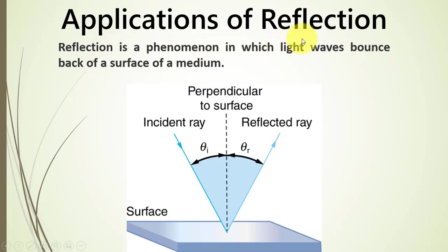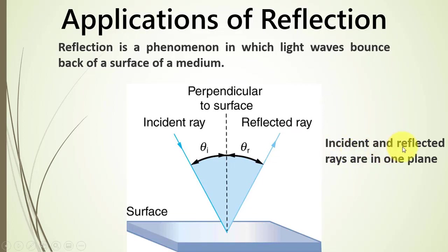The first topic is the applications of reflection. Reflection is a phenomenon in which light waves bounce back off a surface. Consider a light ray hitting a smooth surface and bouncing back. The perpendicular to the surface is the normal line. For a smooth surface, the incident and reflected rays will always be in one plane, and the angle of incidence will always be equal to the angle of reflection.